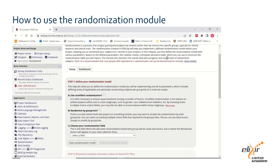Step 1 allows you to opt for stratified randomisation, randomisation by group or site, and to choose your randomisation field. Sometimes specific characteristics of patient subgroups can have an effect on the intervention you are measuring. You can account for this in the randomisation module by stratifying your randomisations by specific subgroups such as age, gender and ethnicity.